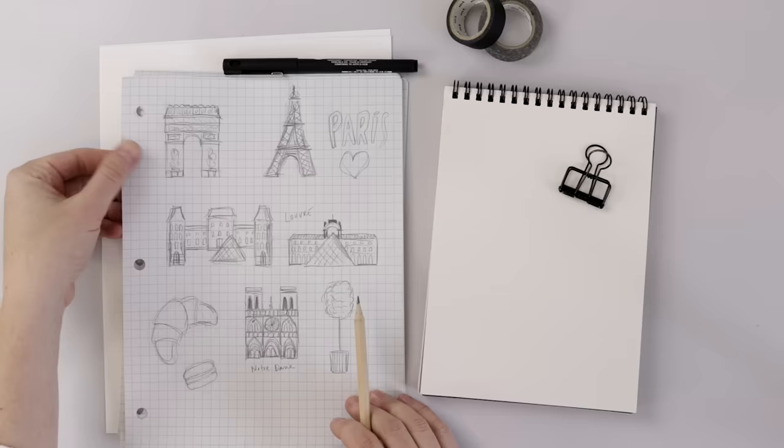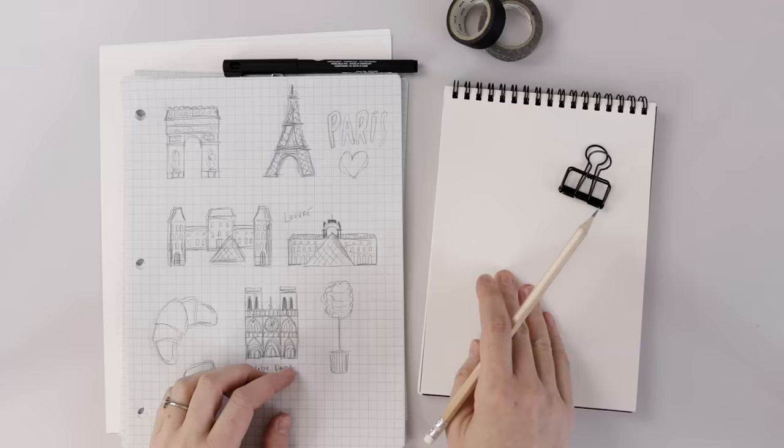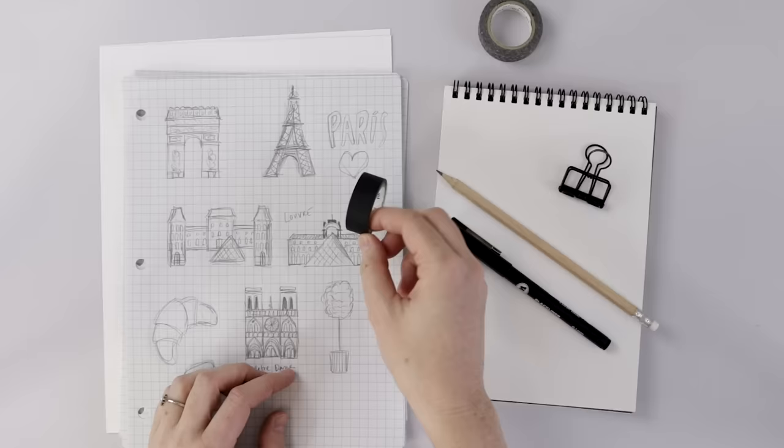So what you're going to need is graph paper, good copy paper could be your journal or a sketch pad, a pencil and eraser, some artist pens.